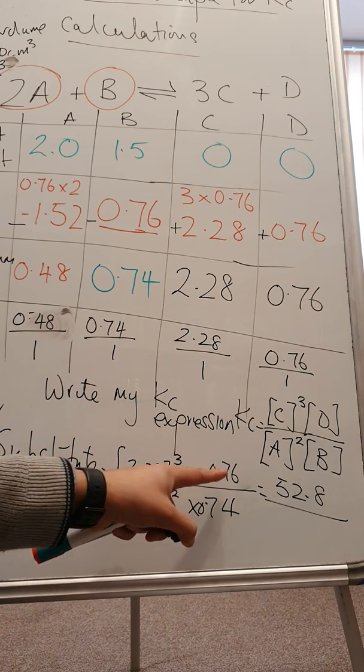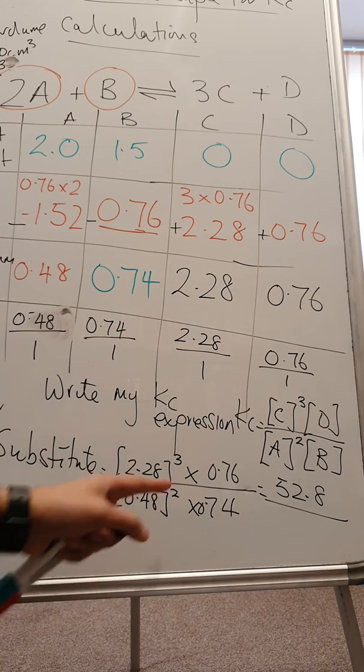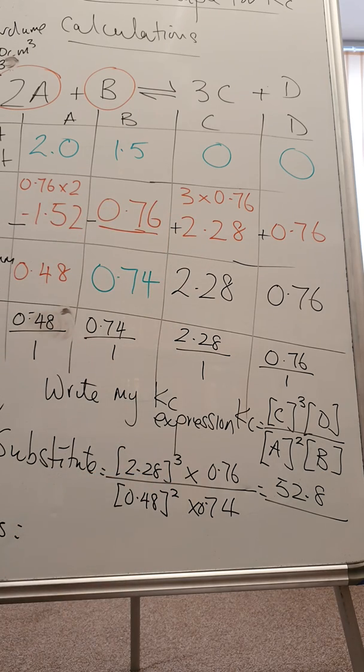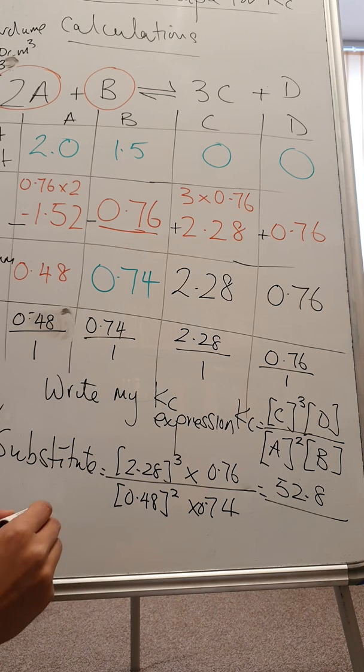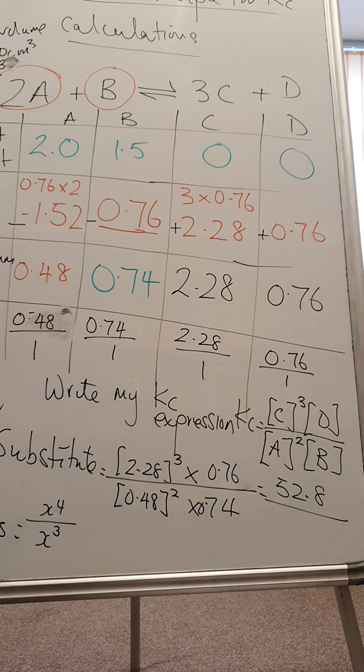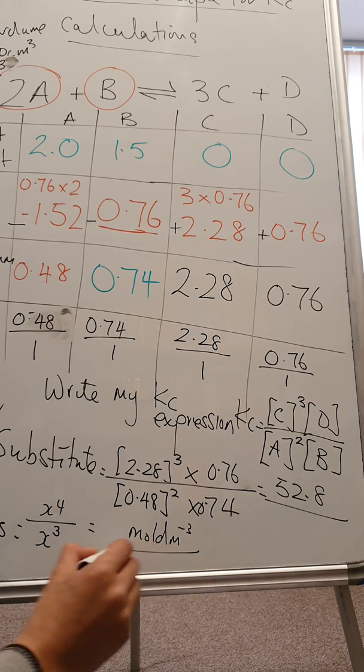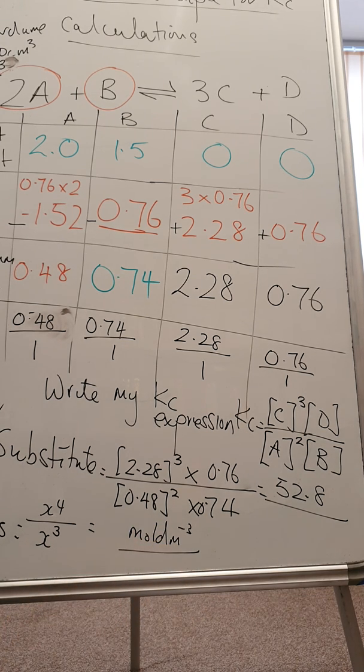Units - I've got power of four on the top and power of three on the bottom. So on the top I have x to the four where x is mole per dm cubed, so my units are mole per dm cubed, and there's my answer.